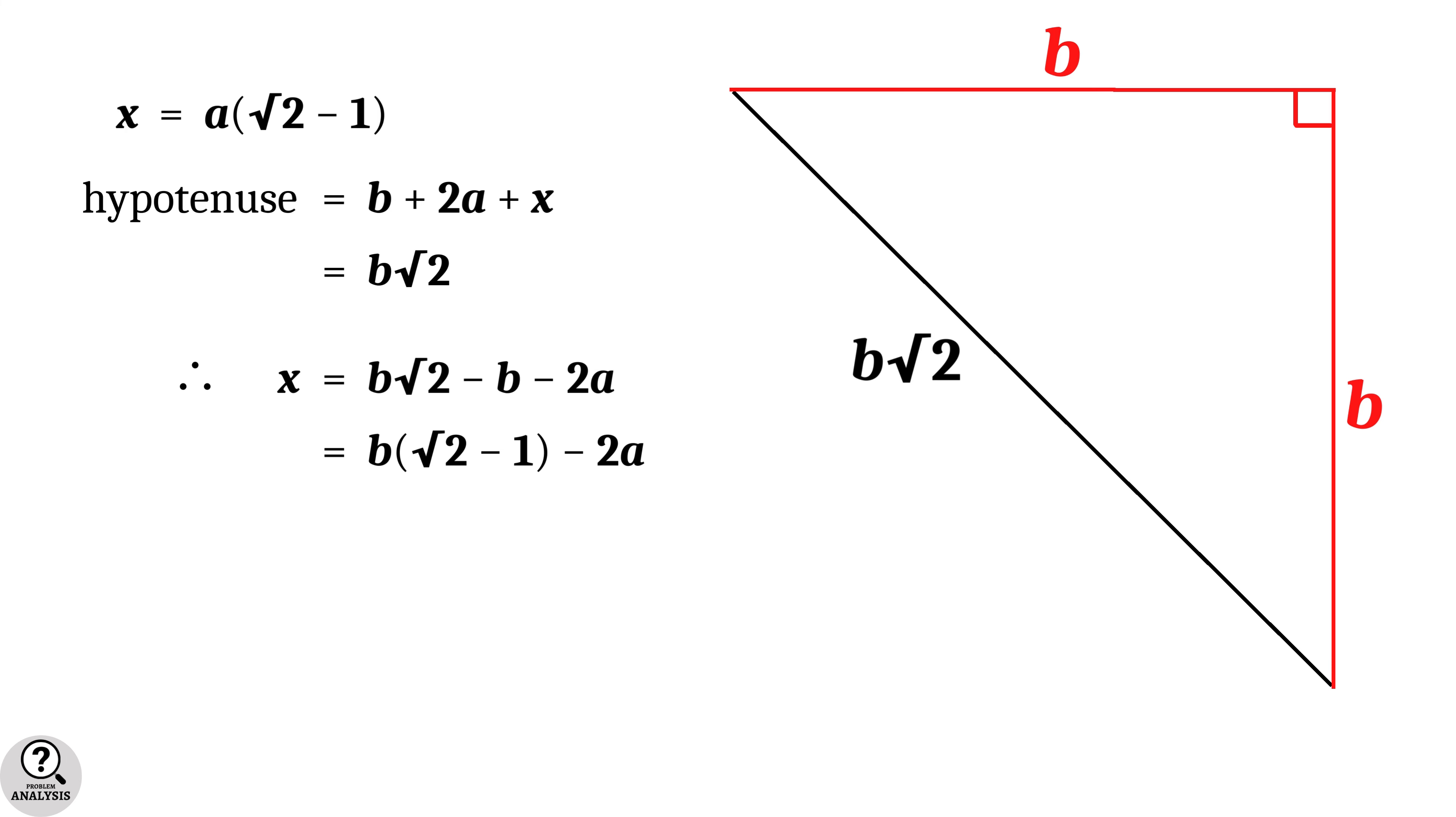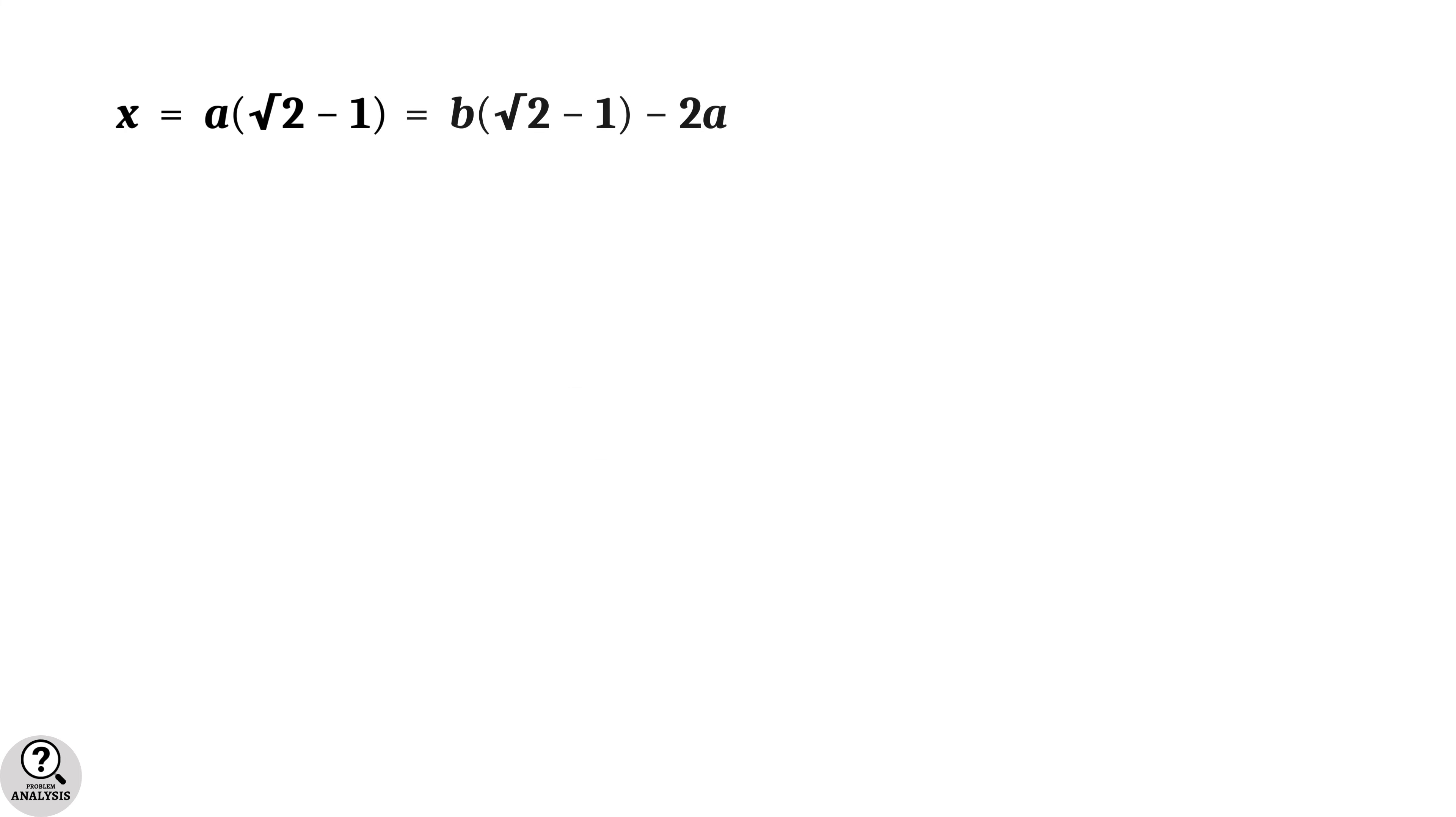Now we have two expressions for x and equate both of them. This gives a(root 2 - 1) equal to b(root 2 - 1) - 2a. That is, a(root 2 - 1) + 2a equal to b(root 2 - 1). In this equation, left hand side simplifies to a(root 2 + 1). Therefore, a(root 2 + 1) equal to b(root 2 - 1).